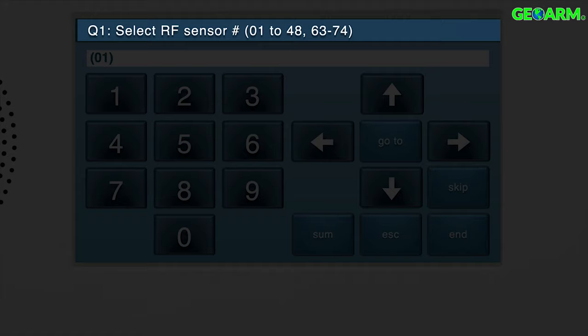System Configuration is navigated via Questions and Sub-Questions. Wireless zones are programmed in Q1, so we're already on the correct question for wireless devices.